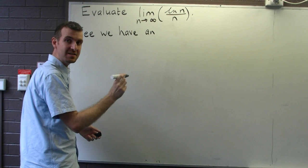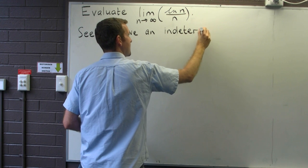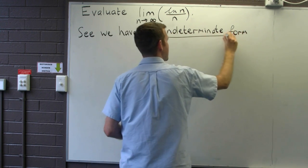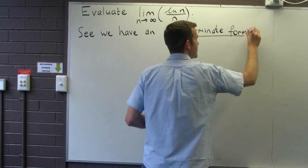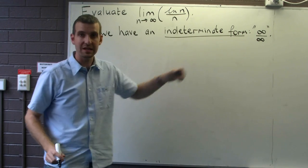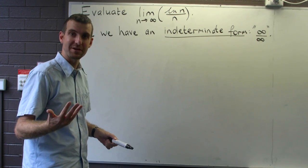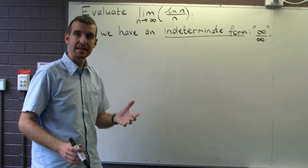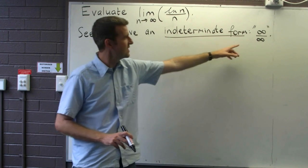So here we have an indeterminate form — in particular, this indeterminate form is infinity over infinity. It's not clear what this is; it could be finite, it could be infinite. Let's dig a little bit deeper into the problem. When you see this indeterminate form, it should trigger in your mind L'Hôpital's rule — a way of evaluating limits of this form.